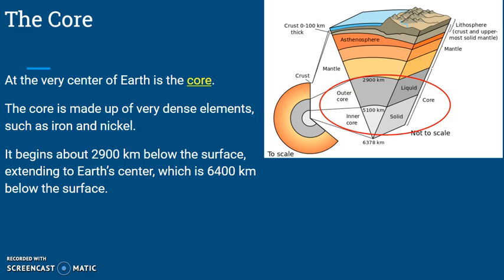Now let's talk about the core. On the picture I have circled this part of the earth — that would be the core, right here in the middle. The core is made up of very dense elements such as iron and nickel. It begins about 2,900 kilometers below the surface, extending all the way to the very center of earth, which is 6,400 kilometers below the surface.